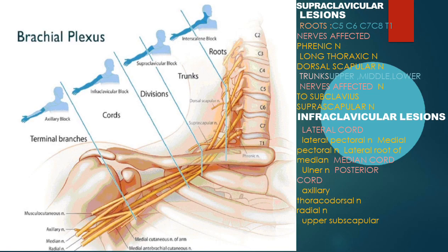Coming to the anatomy, brachial plexus is formed by joining the roots of C5, C6, C7, C8, and T1. These roots form three trunks — upper, medial, and lower. From each trunk there are anterior and posterior divisions, and all these divisions join to form three cords: medial cord, lateral cord, and posterior cord. These cords give the terminal branches. Clinically, brachial plexopathy is divided into supraclavicular lesions, which involve the roots and trunks, and infraclavicular lesions, which involve the cords and terminal branches.